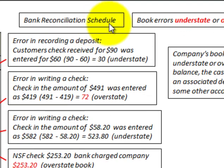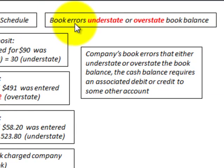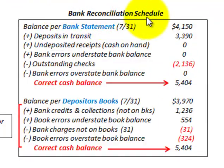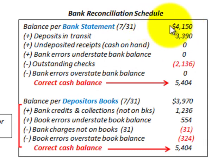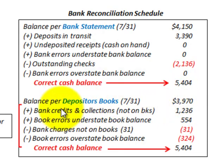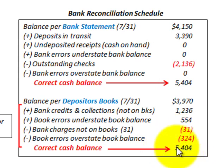Here we're going to be looking at a bank reconciliation schedule, concentrating on book errors that understate or overstate the book balance. We can either have a balance per the bank statement — in this case dealing with a cash or beginning cash balance — or a balance per the depositor's books. We start with a beginning cash balance, then make some additions and subtractions to arrive at the correct cash balance amount.